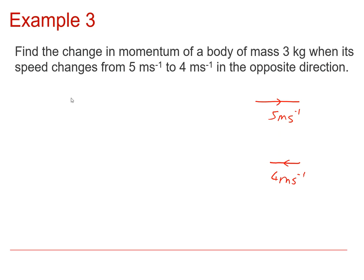So if we think about the initial momentum, assuming that moving to the right is a positive direction, the initial momentum is equal to 3 times 5, and then the final momentum is equal to 3 times minus 4. So its initial momentum is positive 15, its final momentum is negative 12.